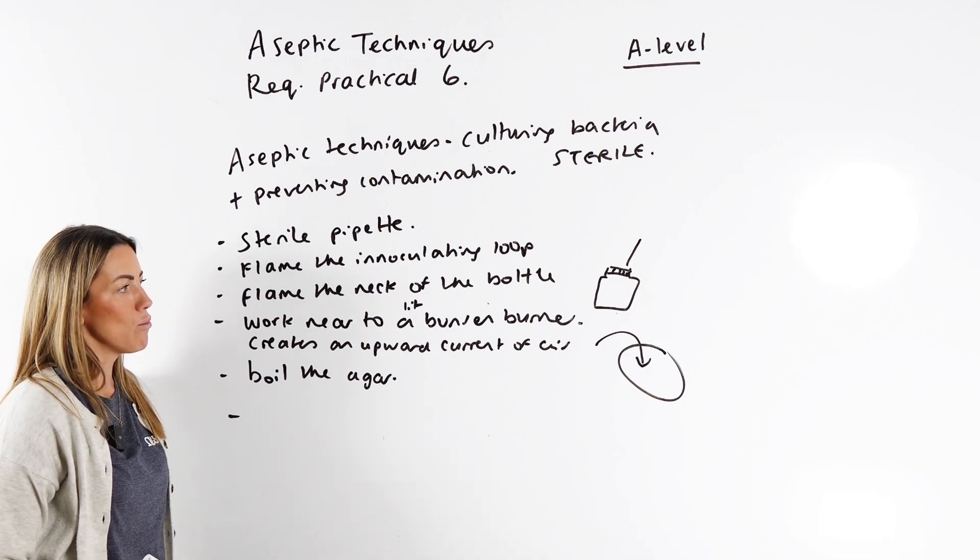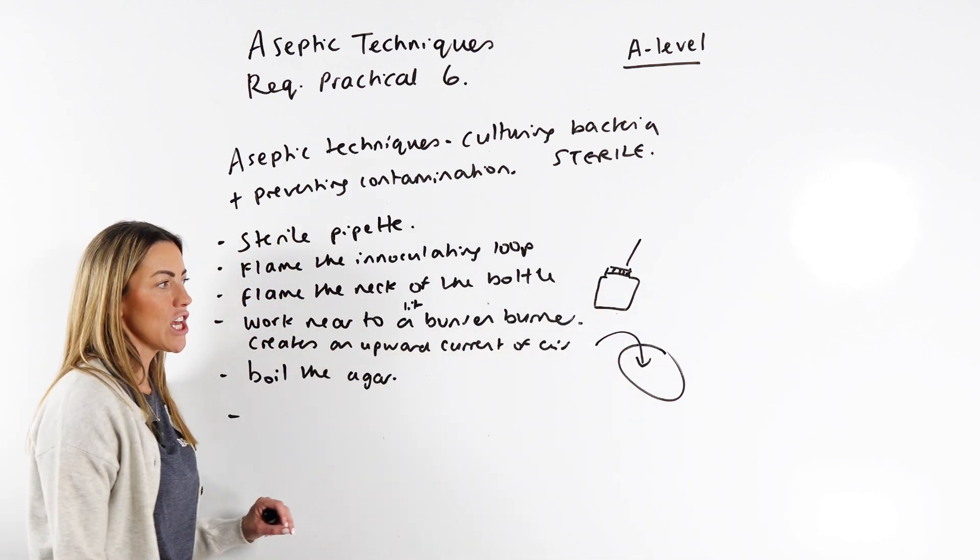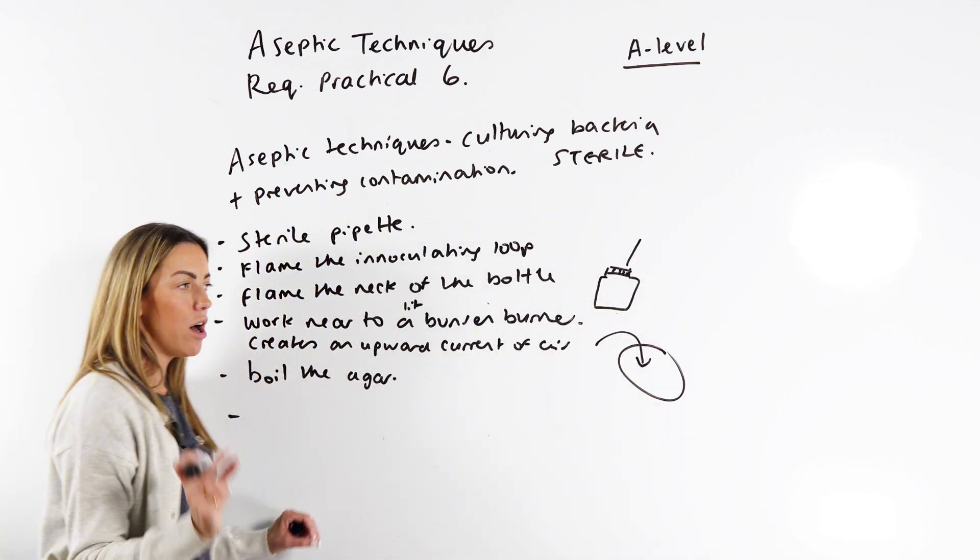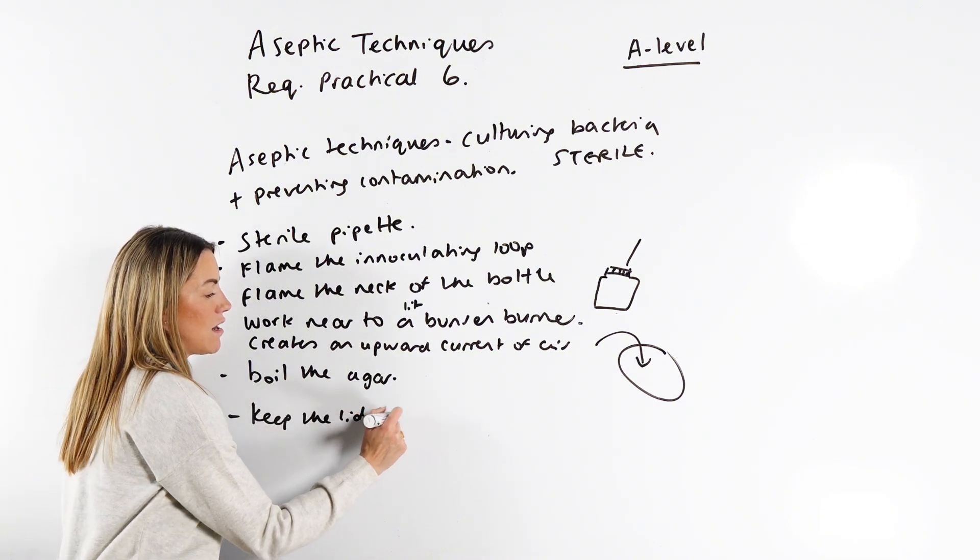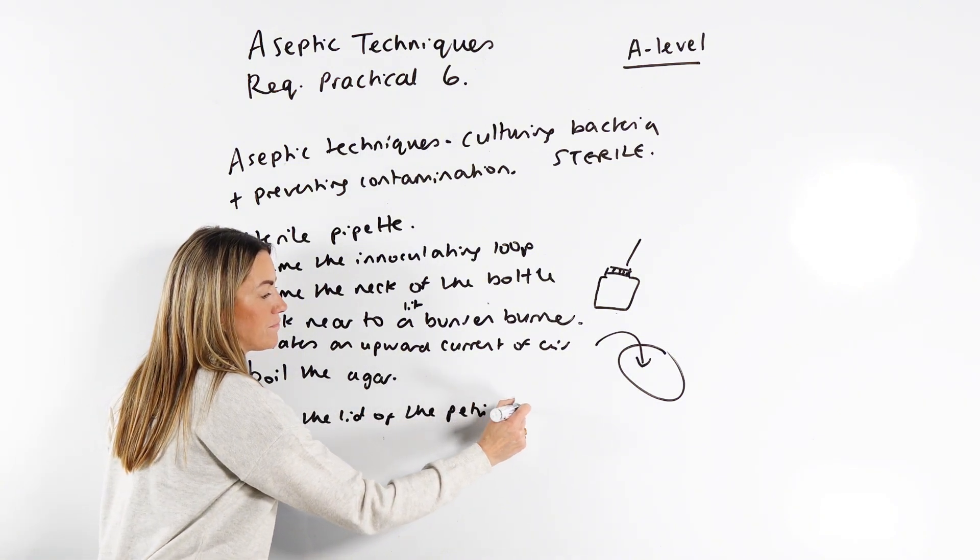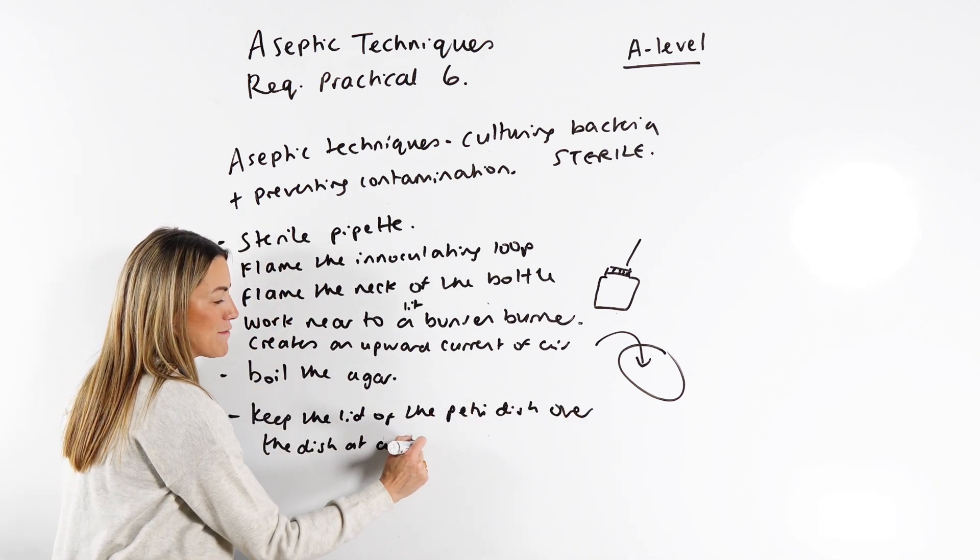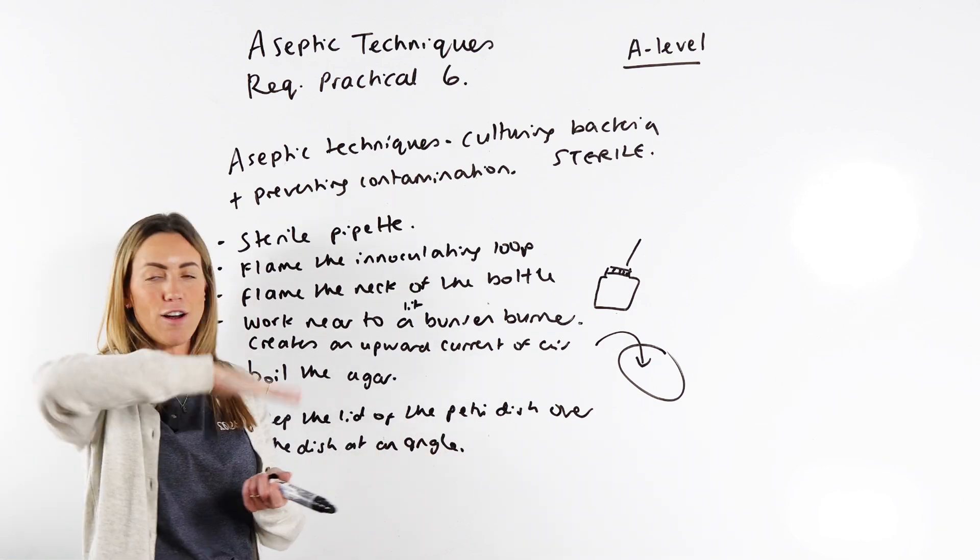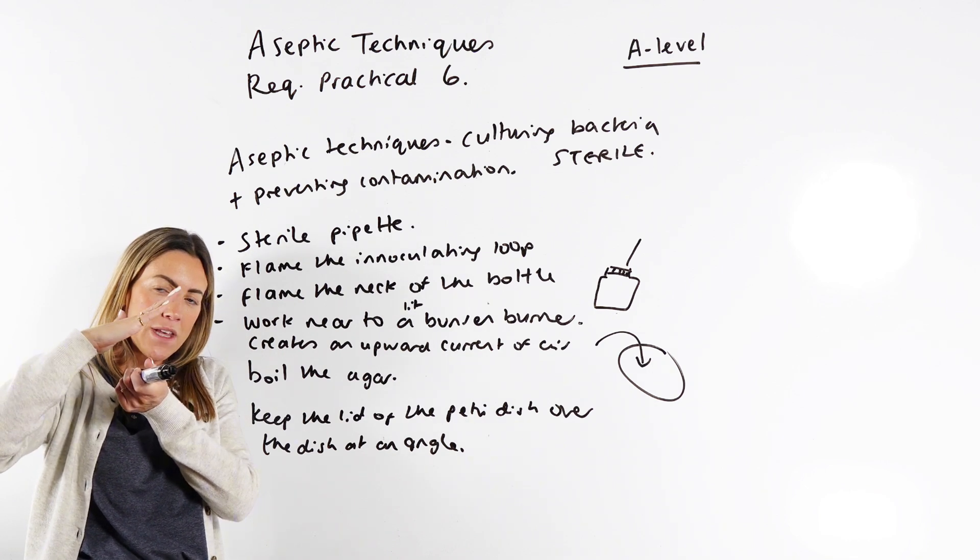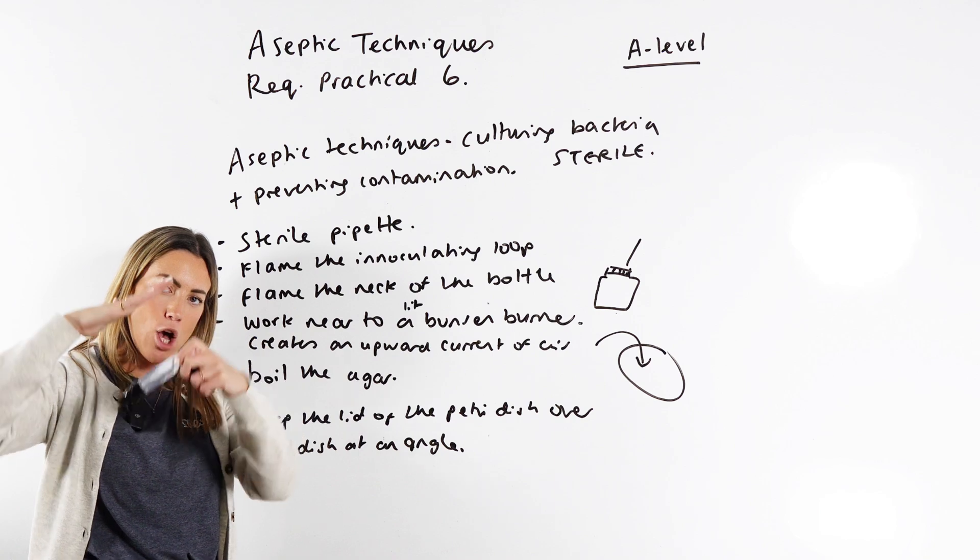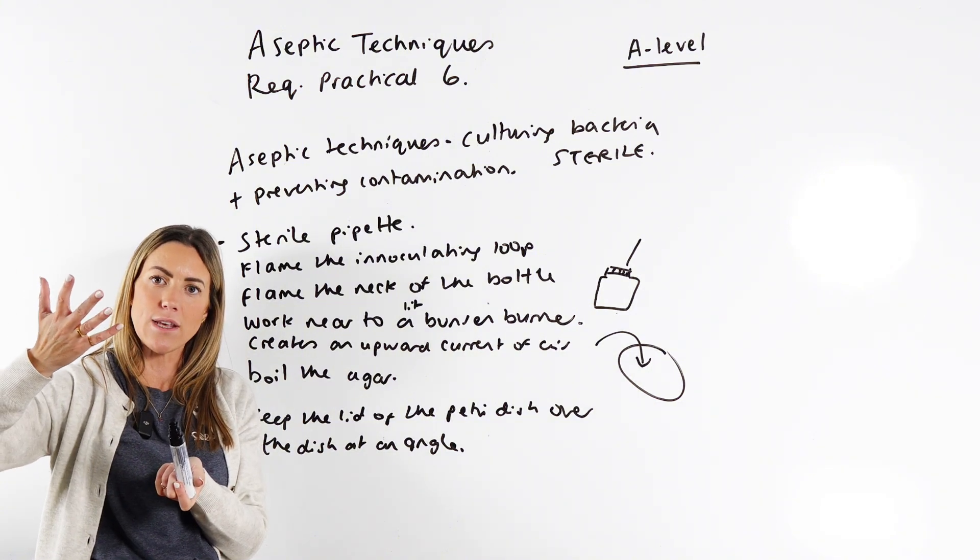Now we're kind of at the point where we've got our sample of bacteria, we've got our agar onto our petri dish, now we need to actually put the bacteria onto the petri dish. When you do this, you keep the lid of the petri dish over the dish at an angle. You're not going to take off the lid and just move it away. You're going to keep the lid over the petri dish at an angle. So you've got enough space to get the bacteria in, but you're still covering the agar. Again, so airborne microorganisms cannot fall onto your agar and contaminate your culture.